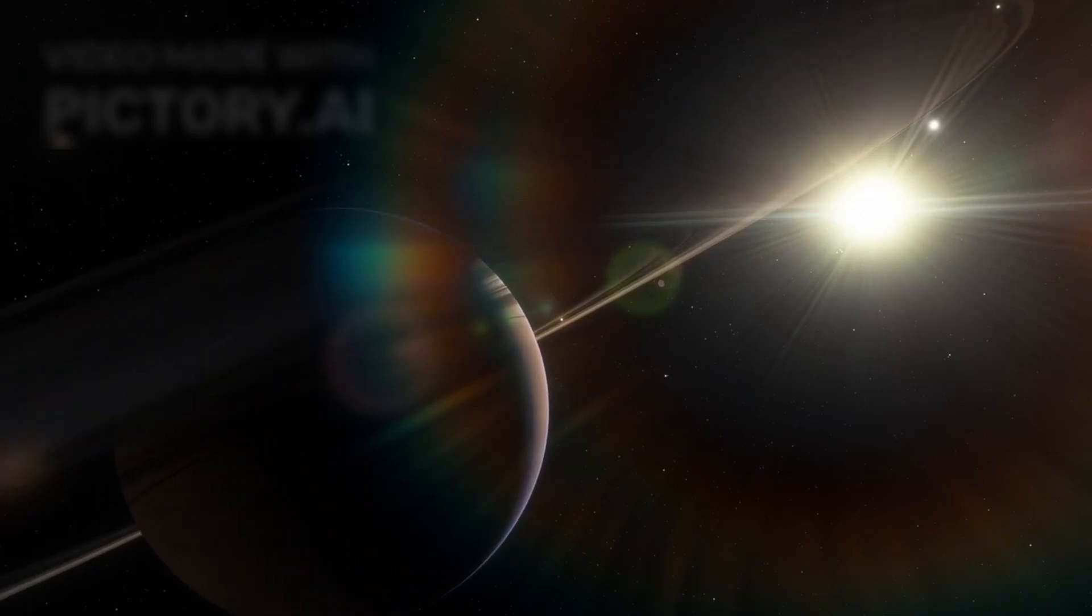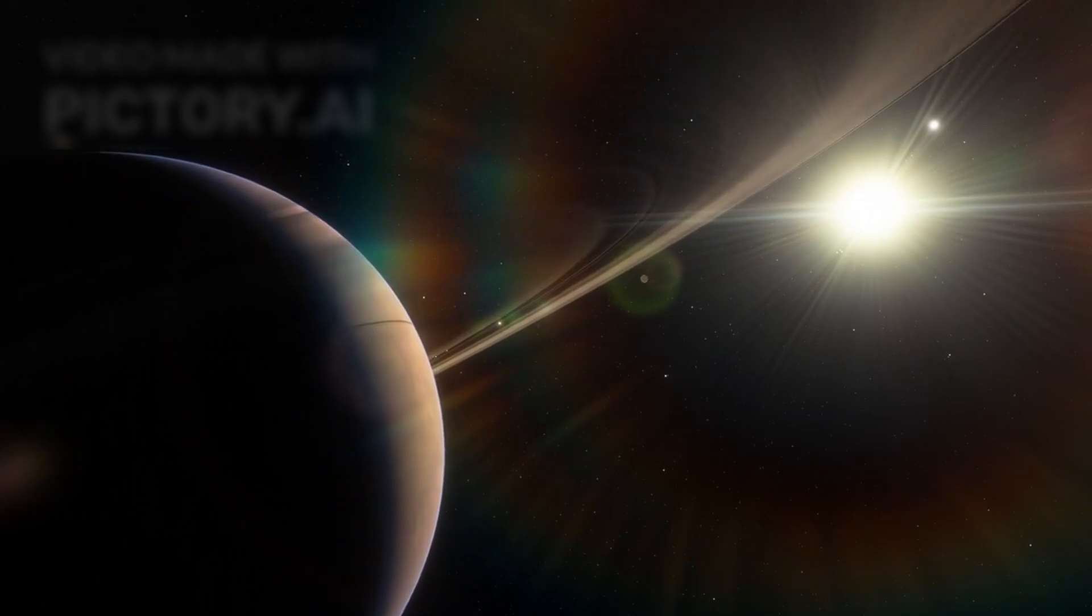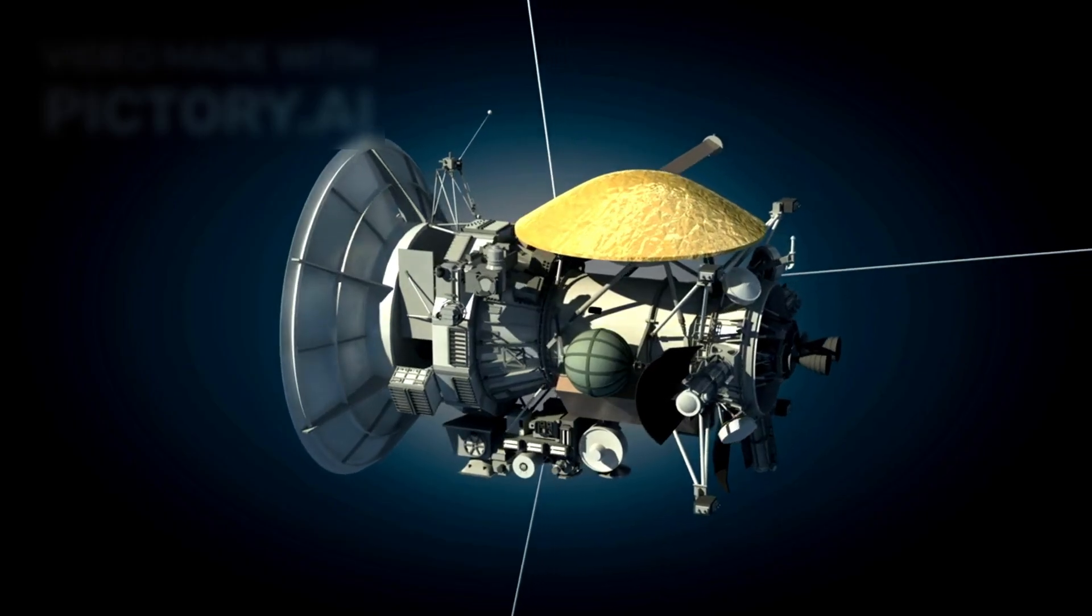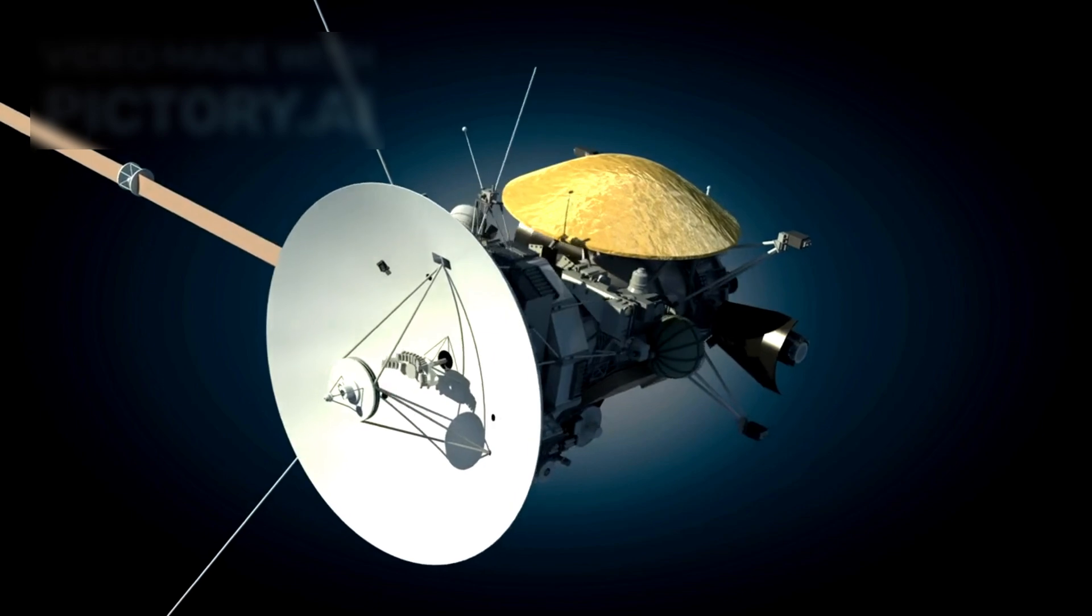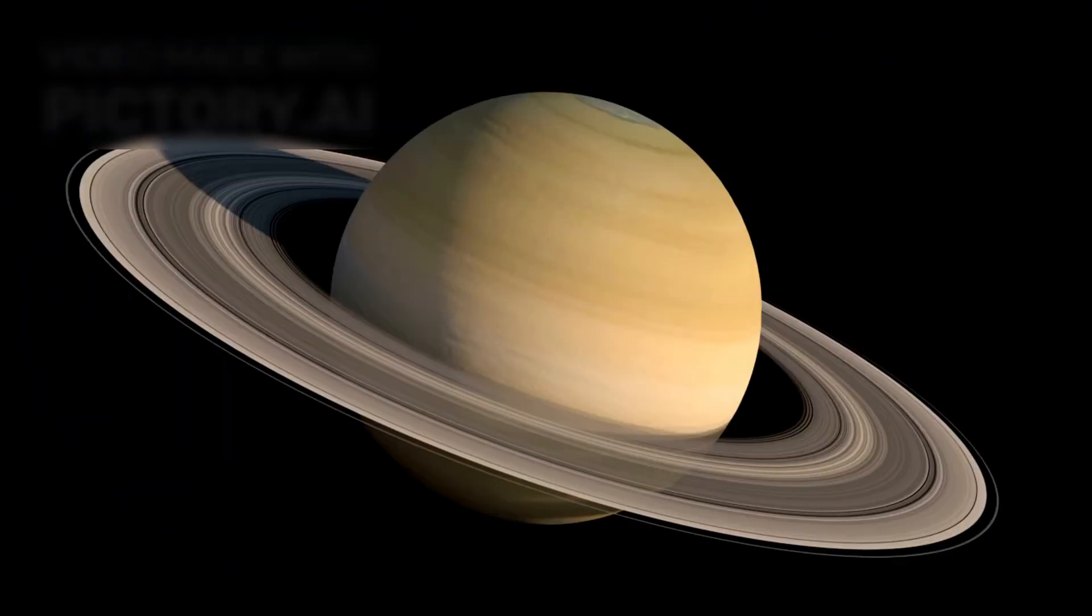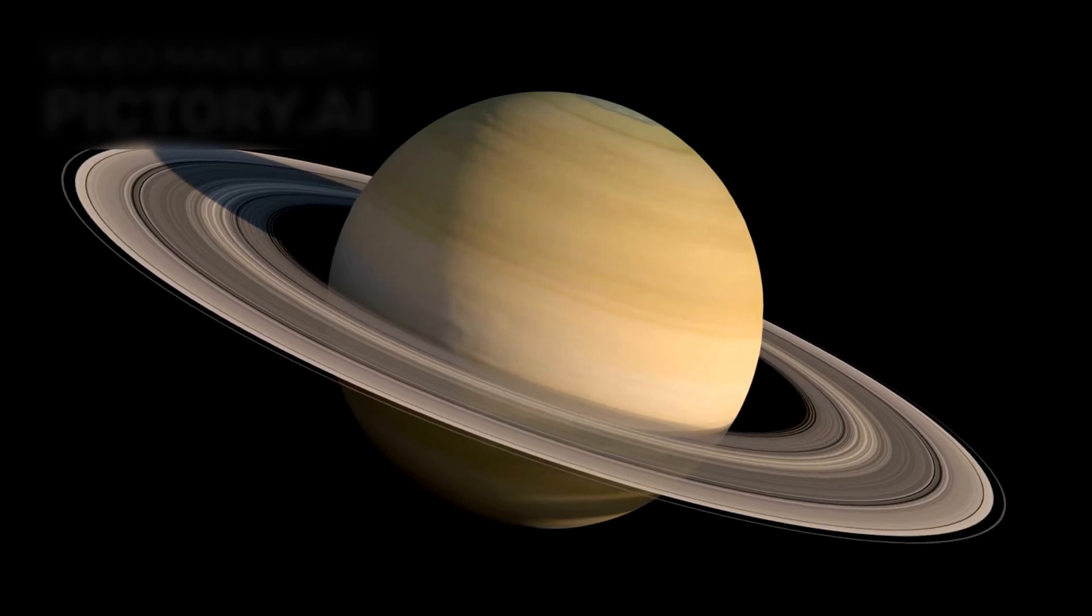On a silent morning in September 2017, a lone spacecraft met its fate in the skies of Saturn. It was the end of Cassini, a robotic emissary from Earth, born of science and sent across the void. For 13 years, it had circled the ringed giant, sending back wonders beyond our wildest expectations.